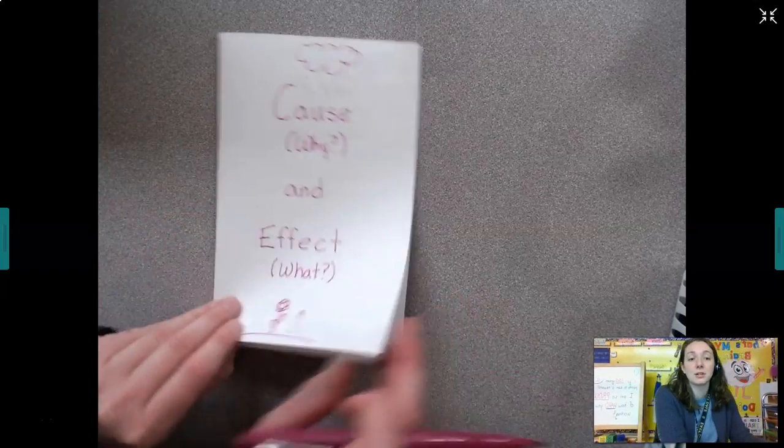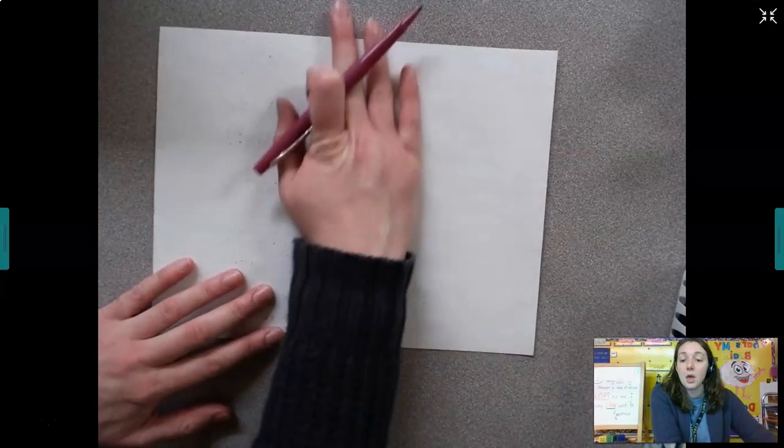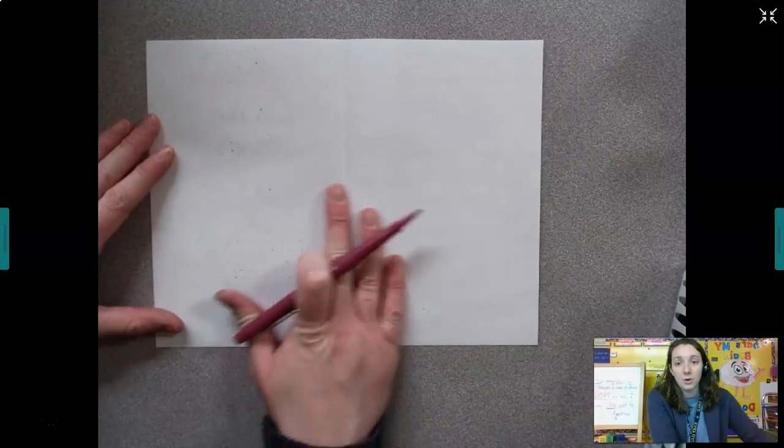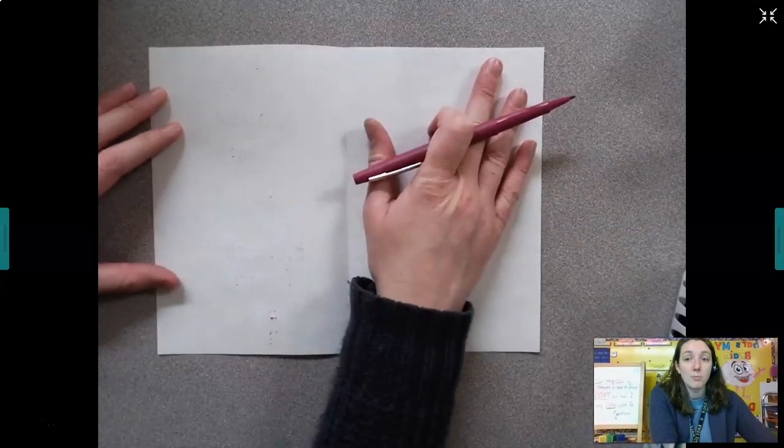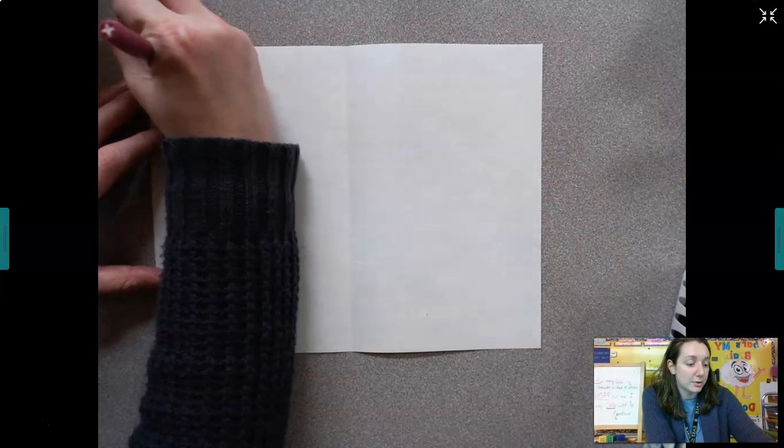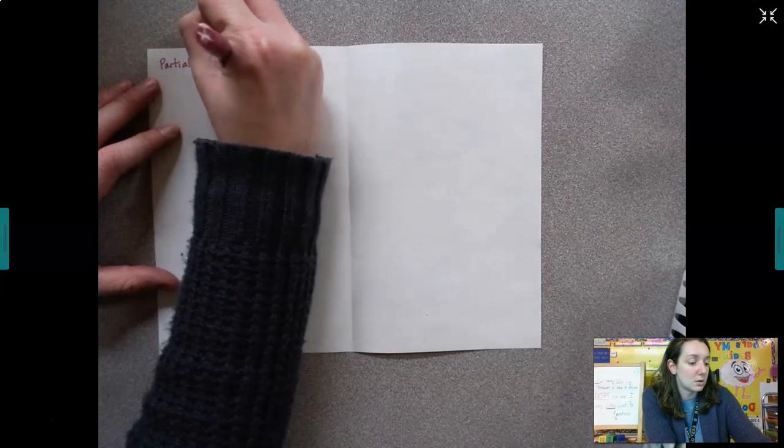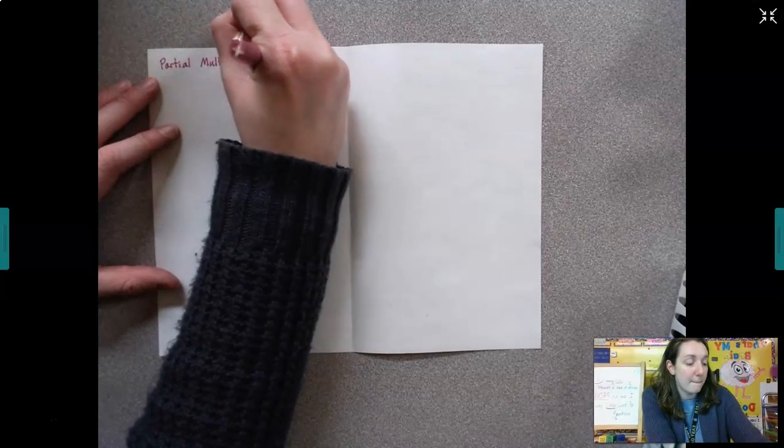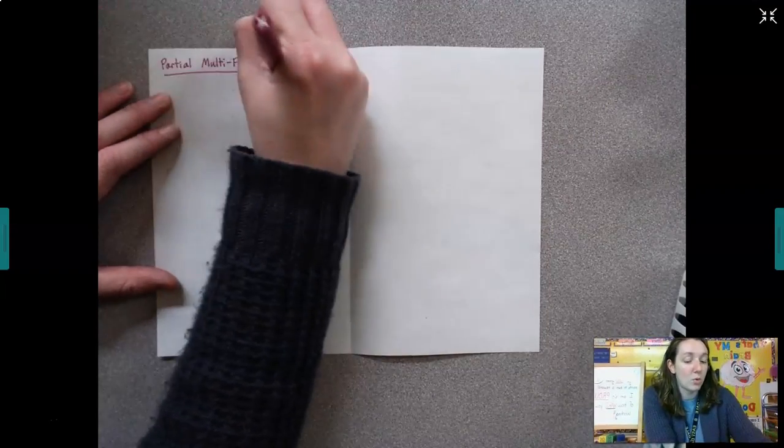Alright, so we're going to think about our text, our book. We're going to make a partial multi-flow map for our book. Partial just means part, for Officer Buckle and Gloria.